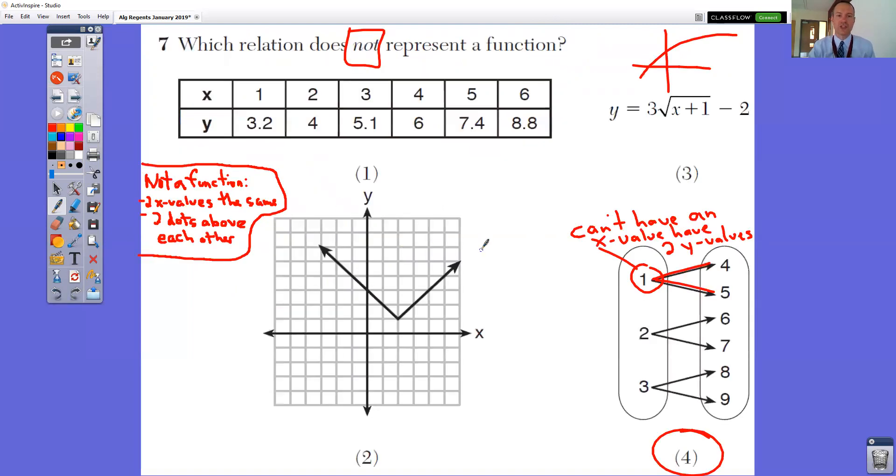In question number seven, which relation does not represent a function? Remember that things are not a function if they have two x values the same, if you're using an x value twice, or if they have two dots right directly above each other because that fails the vertical line test. The correct answer is number four.